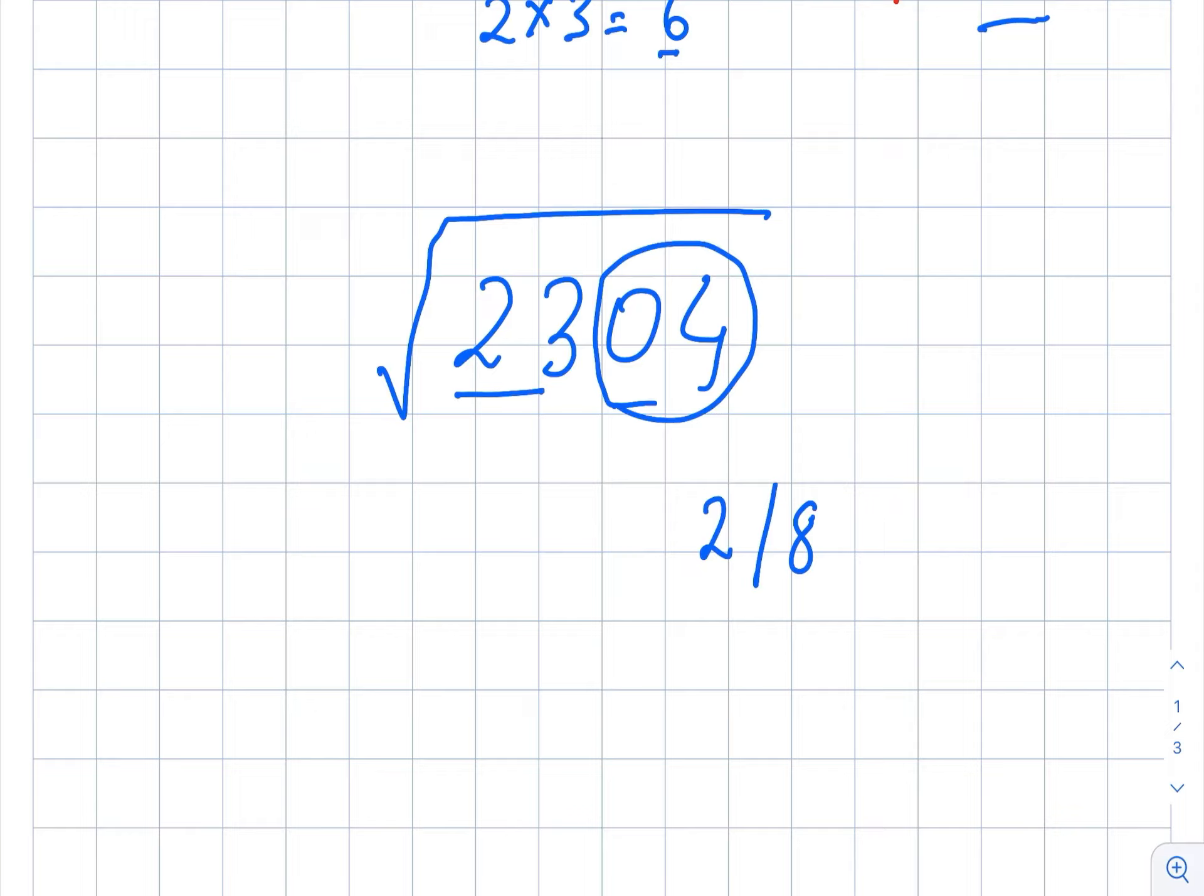But 25 is greater than 23, so we will take the square of 4. 16 is closer to 23. Just write 4 here. Now for the unit digit, 4 multiplied by 5 is 20.